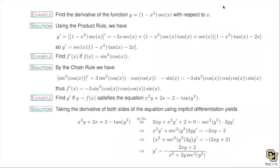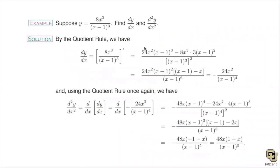This implicit differentiation procedure is very important — there is an implicit differentiation problem on the test, and it also comes up in related rates. It's chain rule at the end of the day, and the notation can sometimes be confusing, so practice is really important. There's also definitely a quotient rule problem on the test, so you absolutely have to memorize the quotient rule.